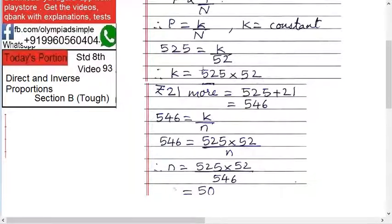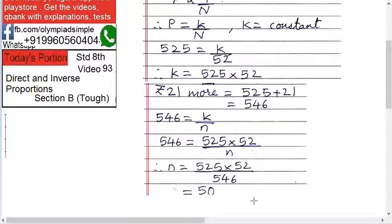K equals 52 into 525, so n equals 52 into 525 upon 546. Solve this and you will get the answer as 50. You can use Vedic Maths tricks to solve this easily, or learn the tables.